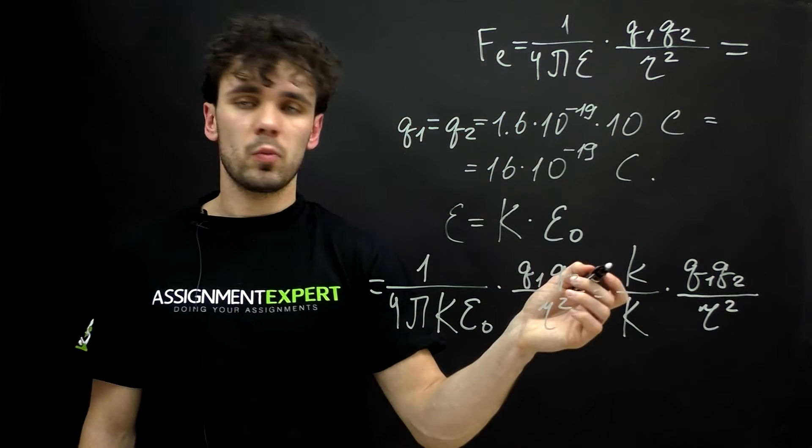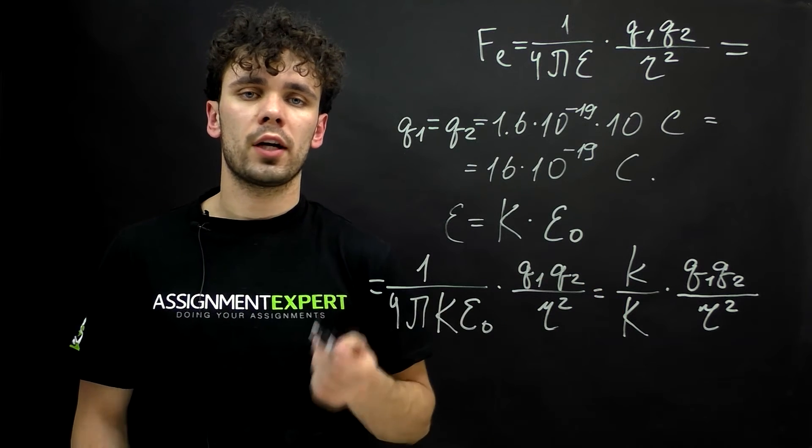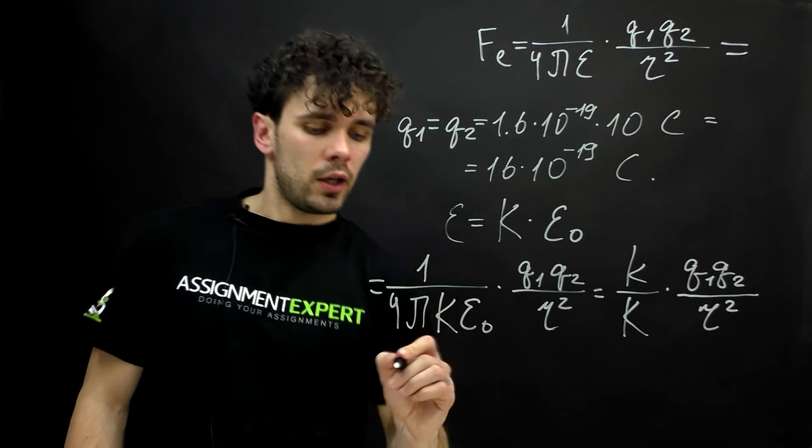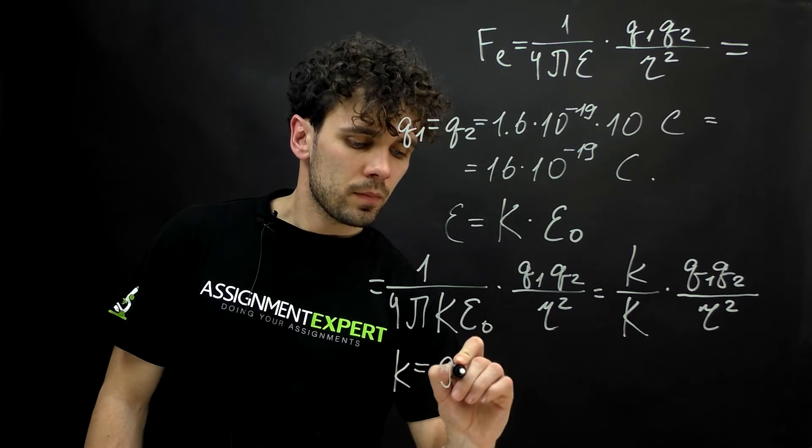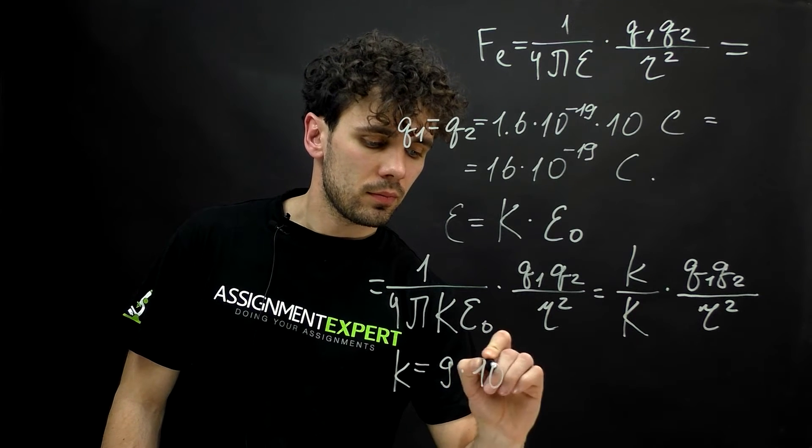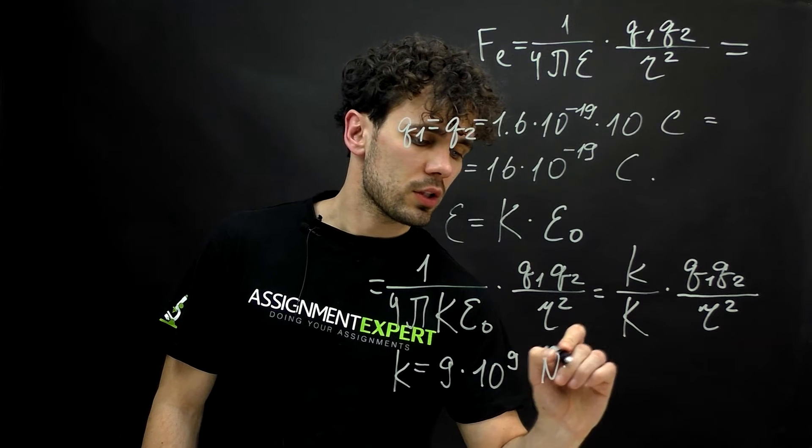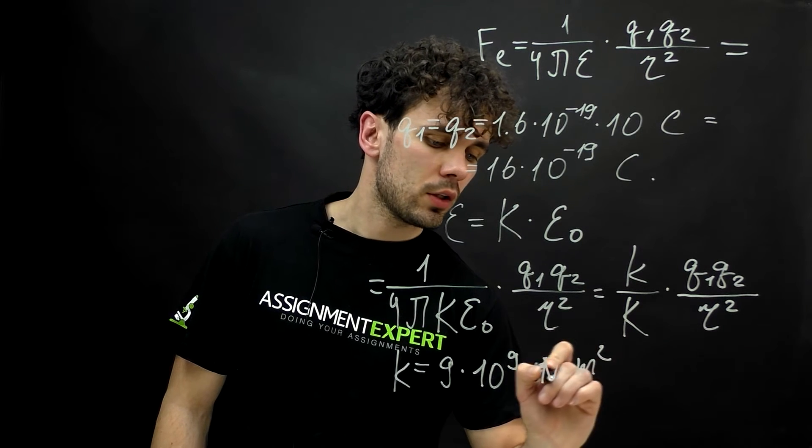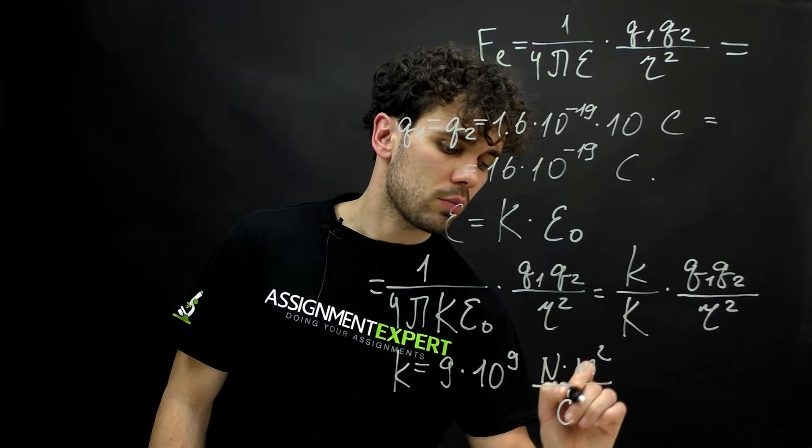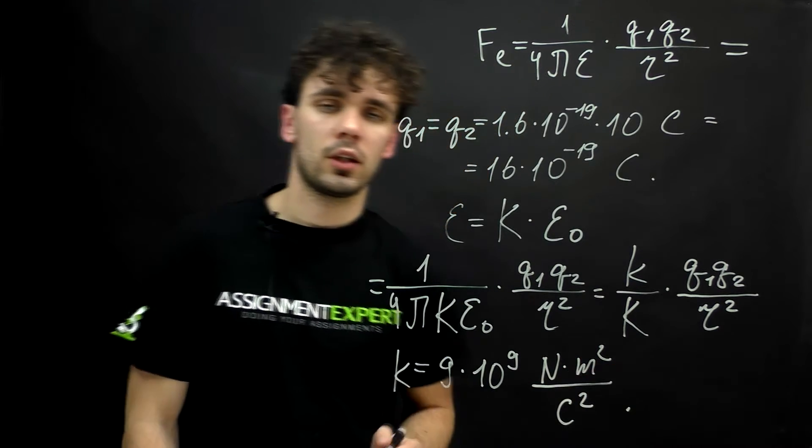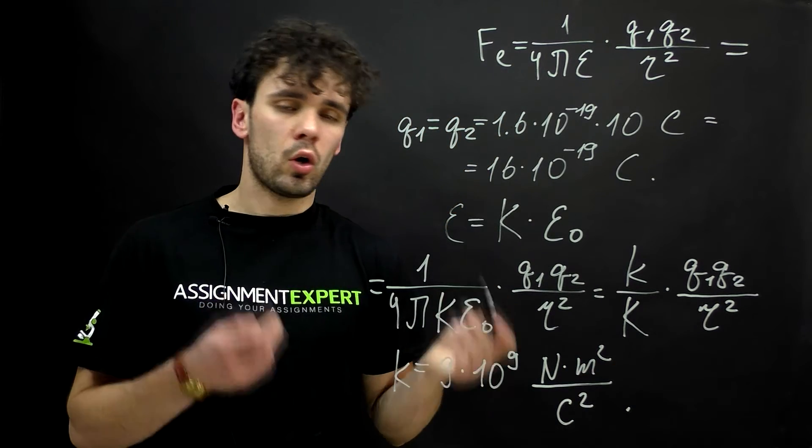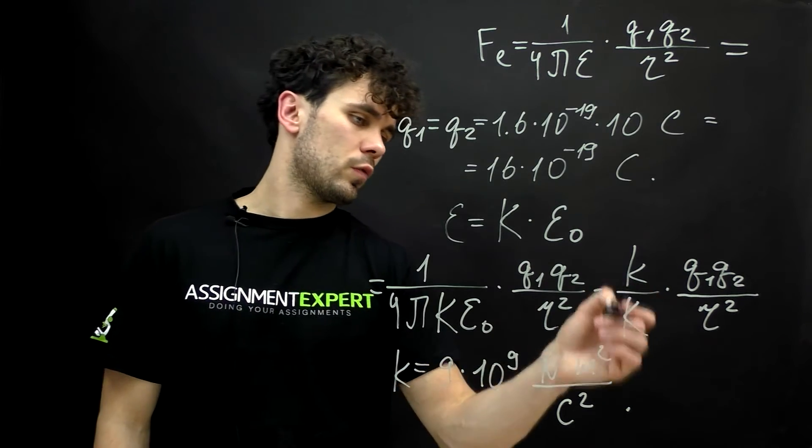And the small k is called the Coulomb constant. And it is equal to 9 times 10 raised to the 9th power of newtons times meter squared over coulomb squared. Now we just need to put all known variables into this formula over here.